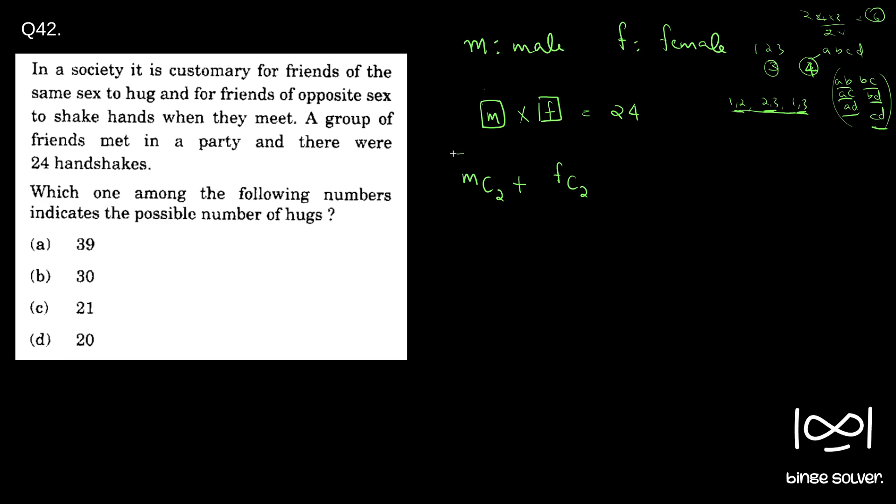So the general equation is MC2 plus FC2. So if you see what is MC2, it's M into M minus one by 2 into 1. Similarly, F into F minus one by 2 into 1. This is the equation. M into M minus 1 plus F into F minus 1 by 2. So now we have to see, the question asks, which one among the following numbers indicates the possible number of hugs? So since we have two unknowns and only one equation like this, M into F equal 24, we can definitely not find the values for M and F for sure. So we have to see all the possible combinations.